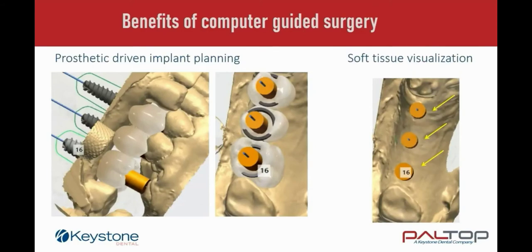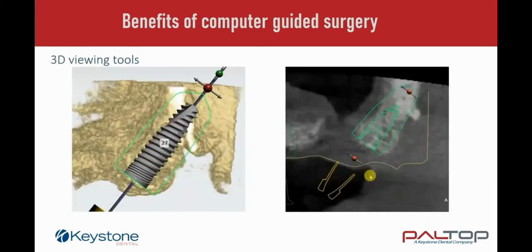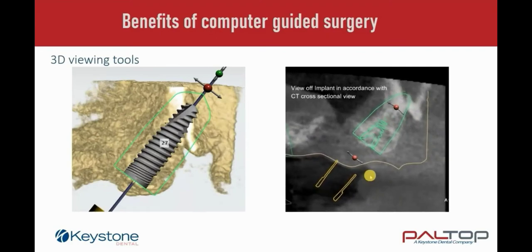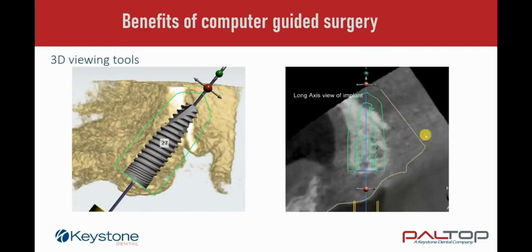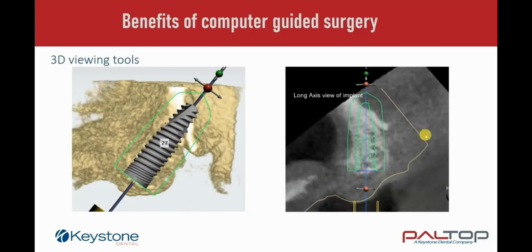By designing virtual teeth, we are able to complete prosthetic-driven planning, ensuring the correct placement and distribution of the implants. We are also able to visualize the emergence profile of the implants in relationship to the soft tissue with the aid of the surface scan. 3D viewing tools available in guided surgery software offer improved visualization. In the image on the right, we can see the CT cross-sectional view of this planned implant. We are able to lock onto the long axis of the tilted implant, as shown in the image, in order to view the implant in 360 degrees rotation.